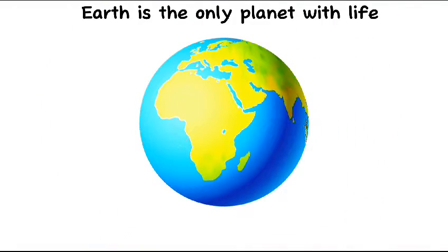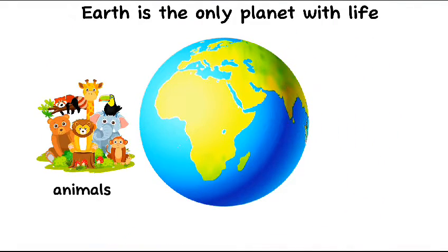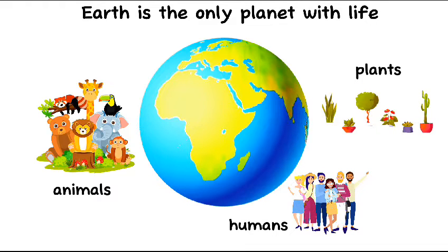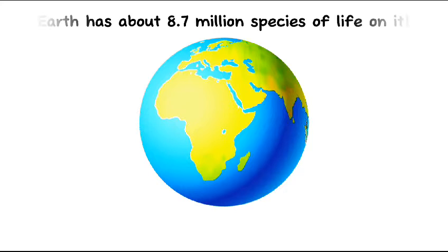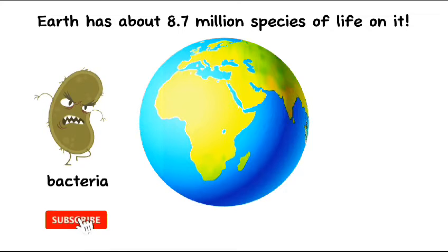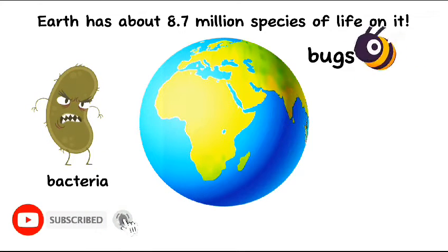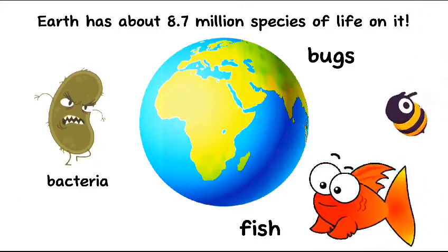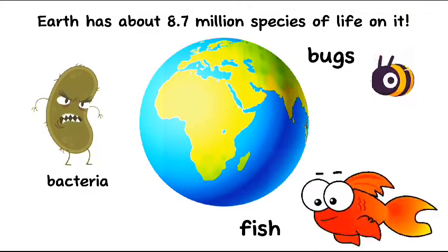Earth is a planet where living things like animals, humans and plants can survive. Living things include bacteria, bugs and many other species like fish. There are a total of 8.7 million species on Earth.